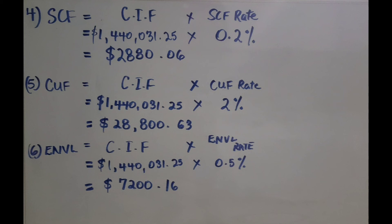Now, for the environmental levy. The environmental levy equals cost insurance and freight multiplied by the environmental levy rate which is 0.5%, and you should get $7,200.16.